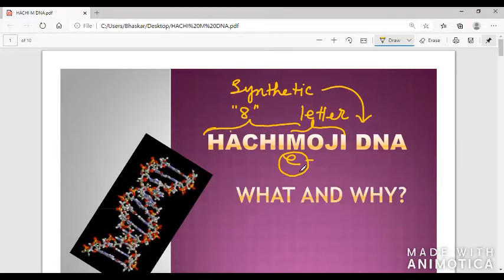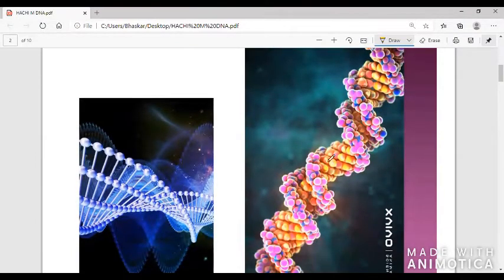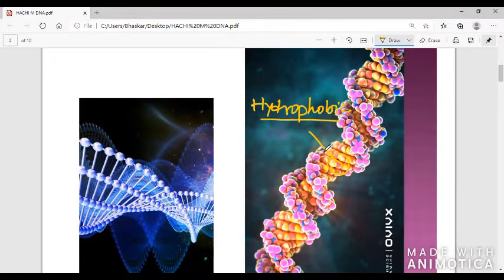Hachimoji means 8-letter DNA. Letter here is the indicator of nitrogen bases. As we all know there are four nitrogen bases in DNA: adenine, guanine, cytosine, and thymine. If we study it in the deeper way, this is the normal structure of DNA. The core part of DNA is hydrophobic, hence when DNA collapses the internal part gets unexposed to water and the external environment is aqueous, so the external part is hydrophilic.